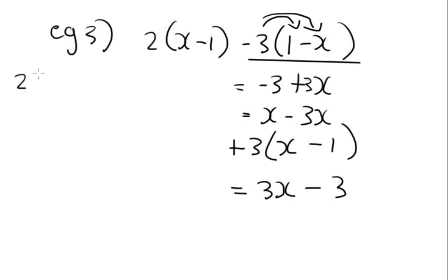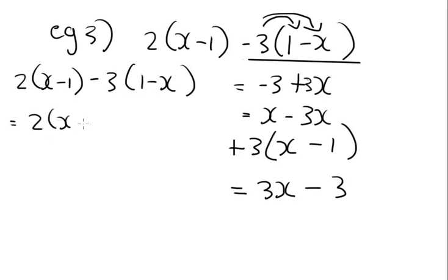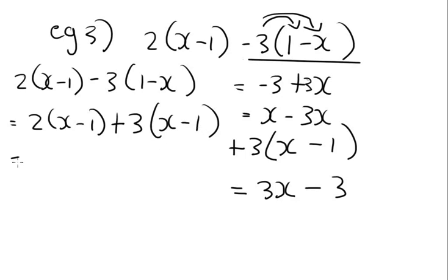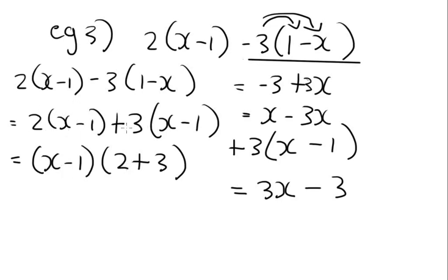So if we do that sum now: you've got 2 multiplied by x minus 1 minus 3 multiplied by 1 minus x. The first step is to change that negative to a positive and swap both signs inside, so it becomes x minus 1. Now I can take out x minus 1 as a common factor. Term 1 divided by x minus 1 is 2, and since we changed the sign, term 2 divided by the highest common factor is positive 3. So I'm left with 2 plus 3, which is 5, and my final answer is 5 multiplied by x minus 1. That is lesson 1 of factorization for grade 9s. This is Mr. Folkvenia from Rockland Senior Secondary School in Mitchell's Plain.